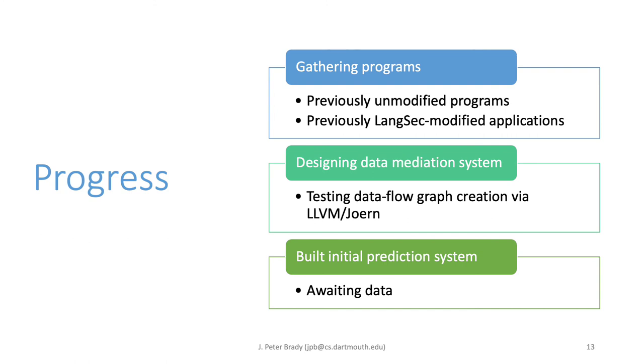Currently we're gathering unmodified and previously LangSec modified applications to test out with this program. We're also currently building the data flow graph creation system, the LLVM Jern connection. And once we start getting data, we do have an initial prediction system running in Python. And so we're just awaiting data now to be able to test that out more thoroughly.